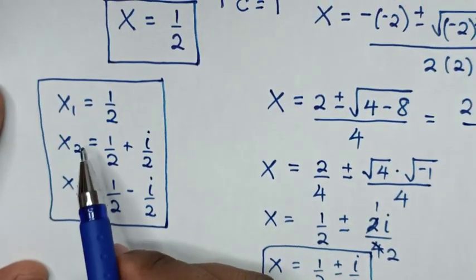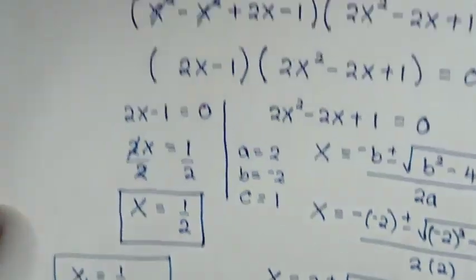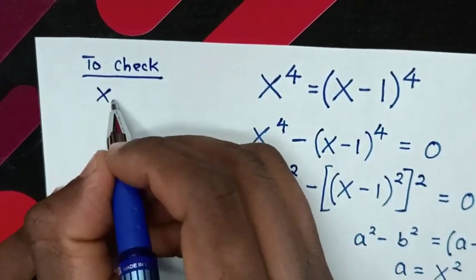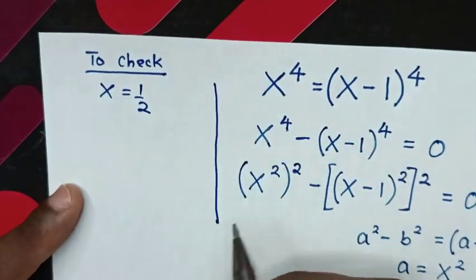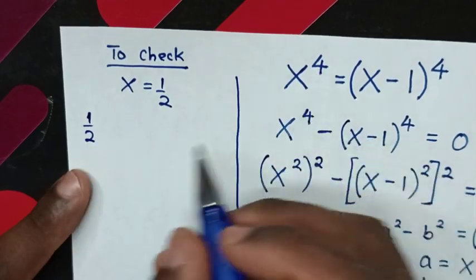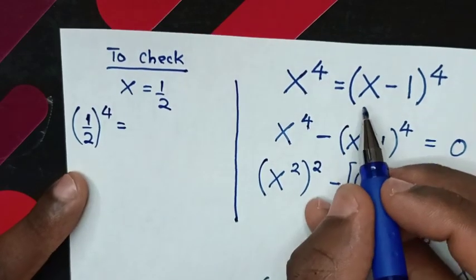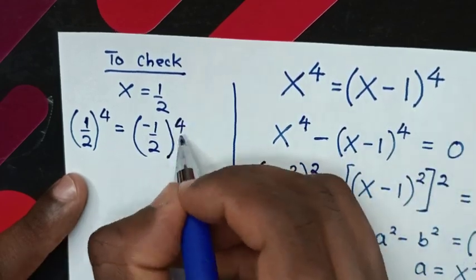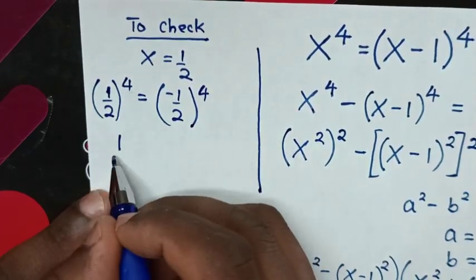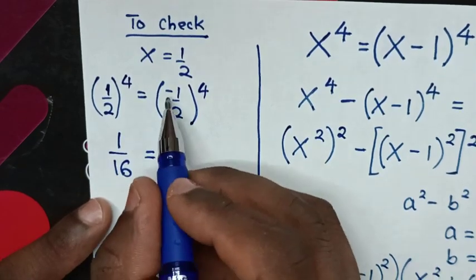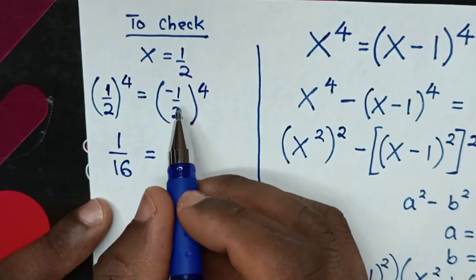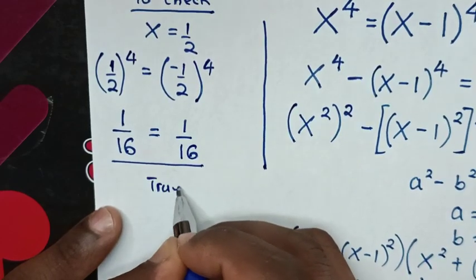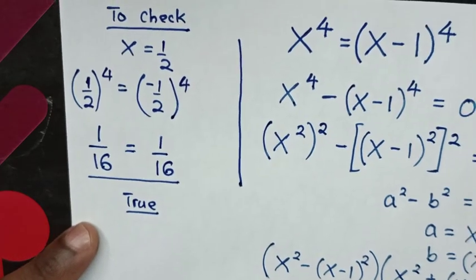Now let's check the real solution x equals 1/2. Substituting into the original equation: (1/2) to the power of 4 equals (1/2 minus 1) to the power of 4, which is (negative 1/2) to the power of 4. The left side gives 1 over 16. On the right side, (negative 1/2) to the power of 4 is positive 1 over 16. Left side equals right side, so x equals 1/2 is confirmed correct.